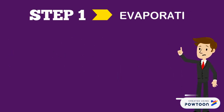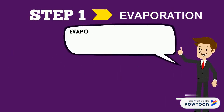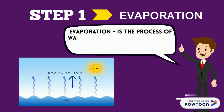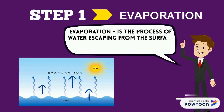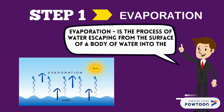Step 1: Evaporation. Evaporation is the process of water escaping from the surface of a body of water into the atmosphere.